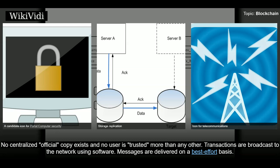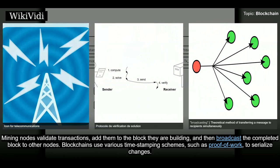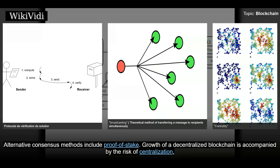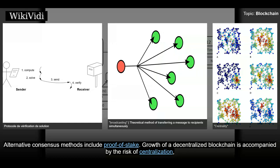Transactions are broadcast to the network using software. Messages are delivered on a best effort basis. Mining nodes validate transactions, add them to the block they are building, and then broadcast the completed block to other nodes. Blockchains use various timestamping schemes, such as proof of work, to serialize changes. Alternative consensus methods include proof of stake. Growth of a decentralized blockchain is accompanied by the risk of centralization, because the computer resources required to process larger amounts of data become more expensive.